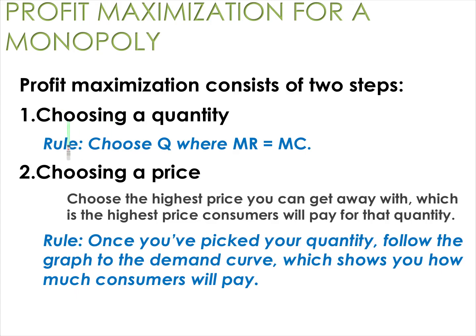For these firms, they choose a quantity first. That rule, to remind you, is you choose the quantity where the marginal revenue just equals the marginal cost. A quantity lower or higher than that will give you less than maximum profit. And then you choose a price. Unlike a competitive firm who is a price taker, you get to choose your price. So what kind of price should you choose? The highest price you can get away with that will still maintain this quantity.